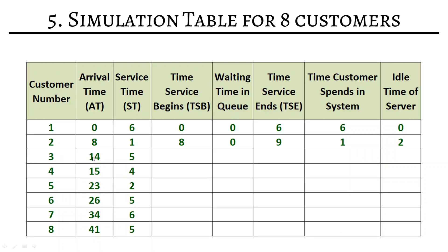Customer 3 arrives at minute 14. The cashier is free, so service begins immediately. Waiting time is 0. Five minutes of service are provided, so service ends at 14 plus 5, which is 19. Time customer spent in the system is 5 minutes. The server was idle between minutes 9 and 14, so idle time is 5 minutes.